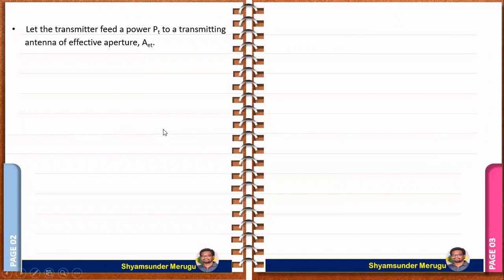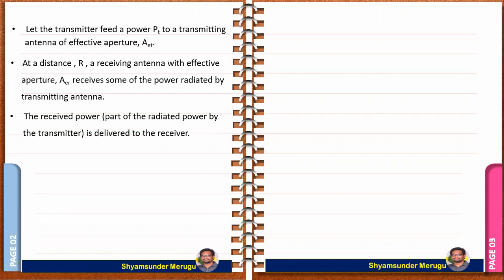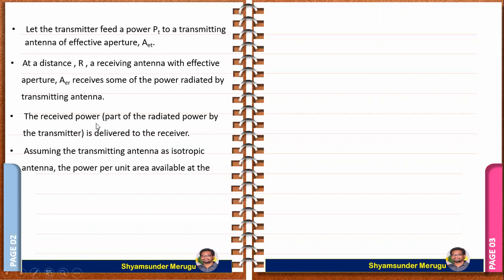Let the transmitter feed a power PT to a transmitting antenna of effective aperture AET. At distance R, a receiving antenna with effective aperture AER receives some of the power radiated by the transmitting antenna. The received power is delivered to the receiver. Assuming the transmitting antenna as an isotropic antenna, the power per unit area available at the receiving antenna is given by SR equal to PT by 4πR².